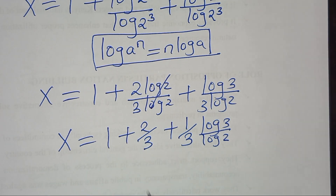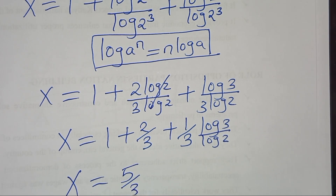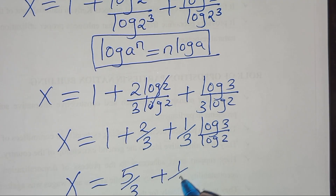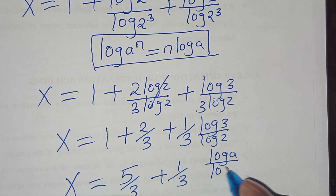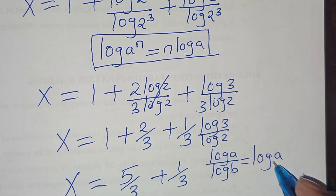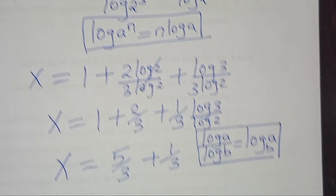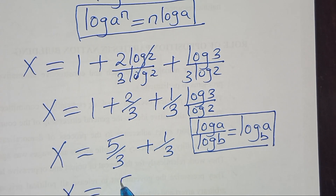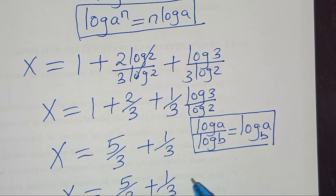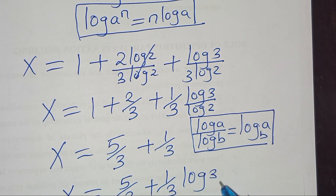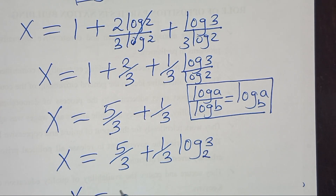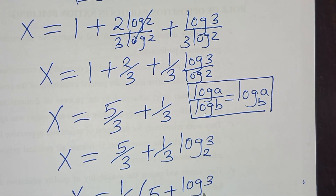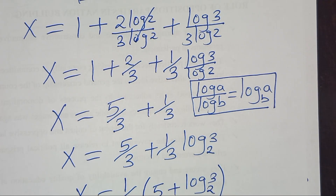Now 1 plus 2/3 equals 5/3. Also log(3)/log(2) is in the form log(a)/log(b), which we can write as log base 2 of 3. Applying this property, x equals 5/3 plus (1/3)·log₂(3). Factoring out 1/3, x equals (1/3)(5 + log₂(3)). This is the value of x.